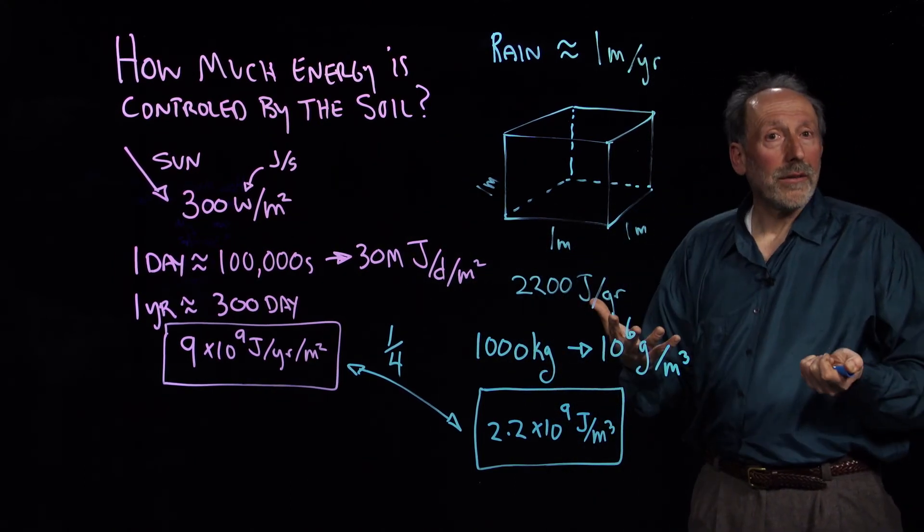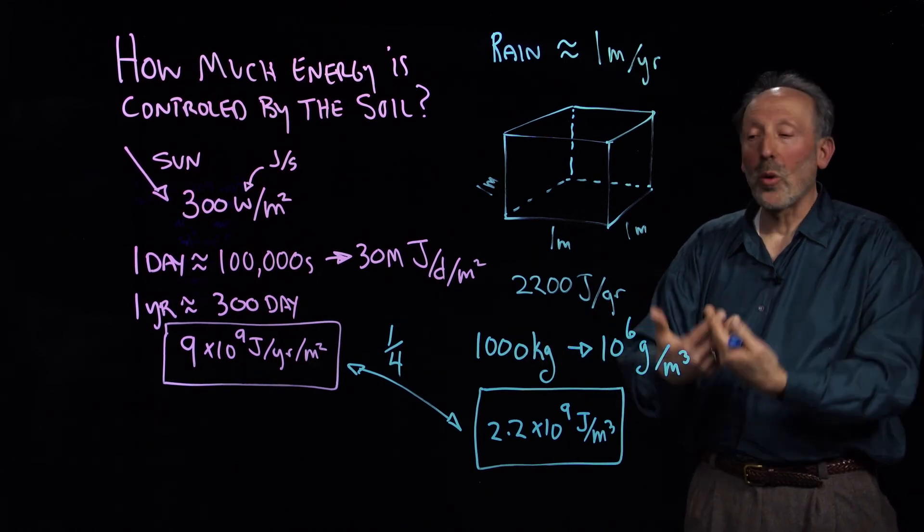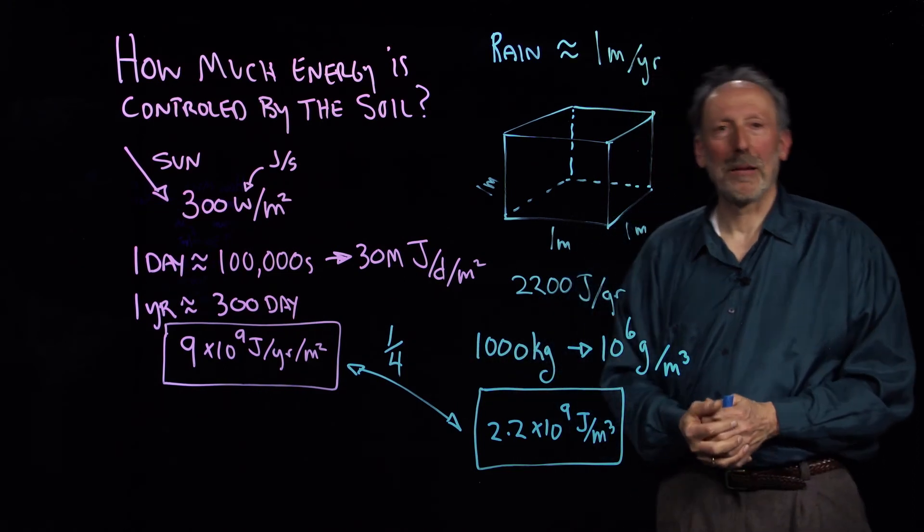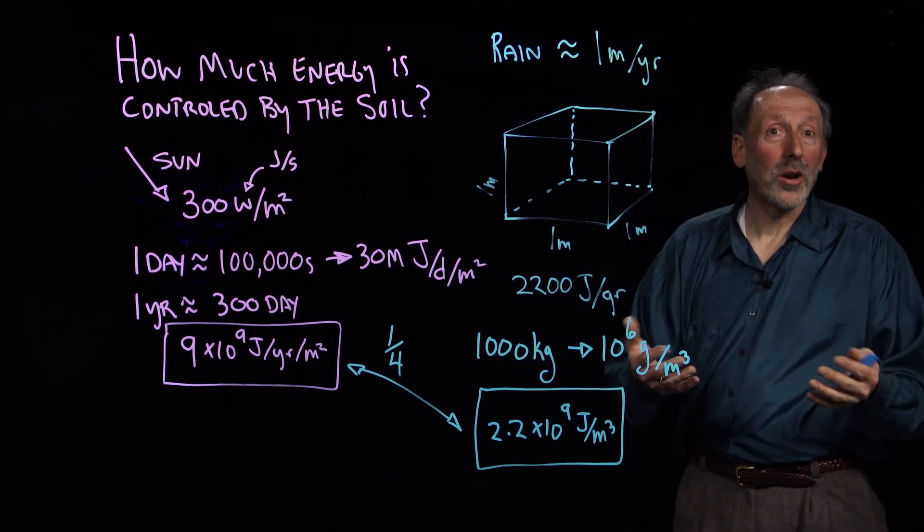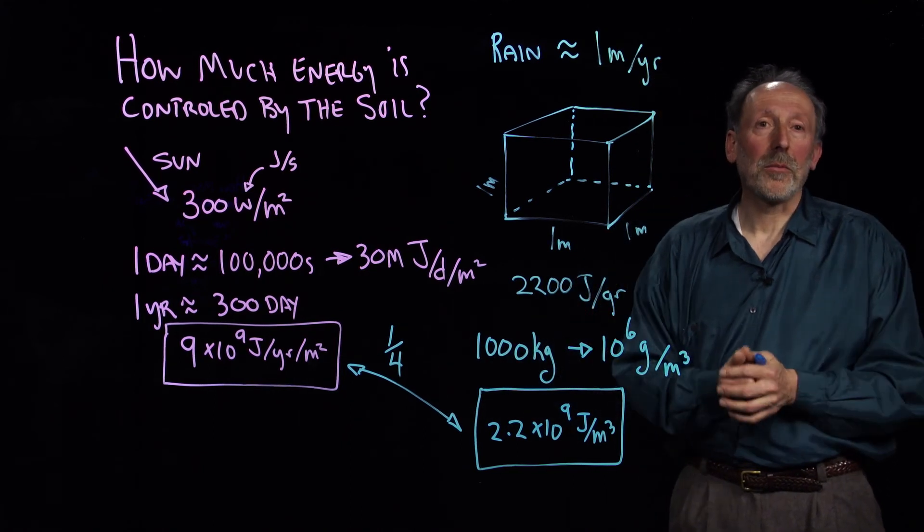So as we irrigate, for example, then we change that energy balance by creating more opportunity for evaporation and perhaps bumping up that number a little bit. Whereas if we deforest and create a desert, then this number is bumped down and the energy goes other places.